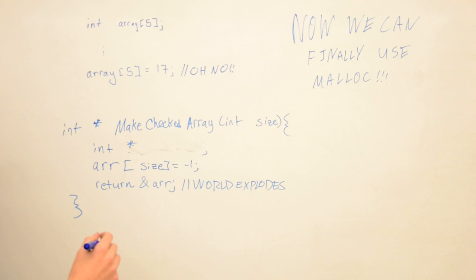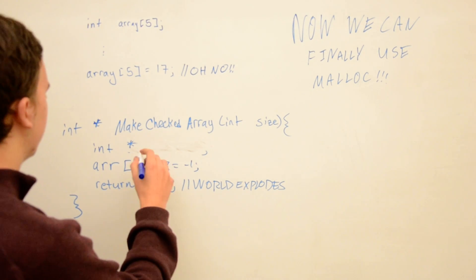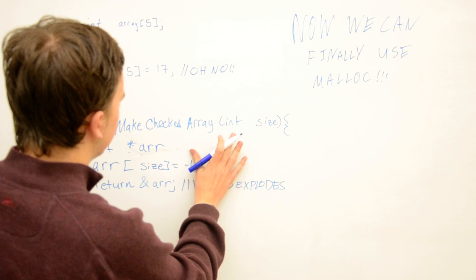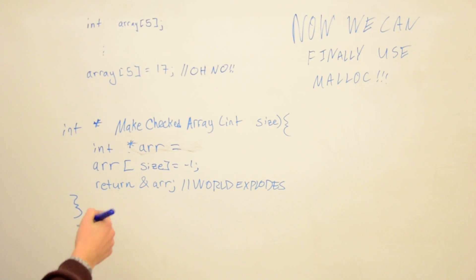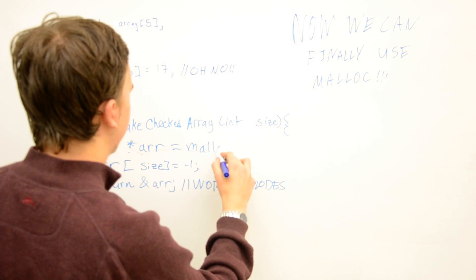because malloc returns a pointer to a chunk of memory. Although arrays and pointers are essentially the same, it's more obvious to the reader that this is a pointer if we use malloc.